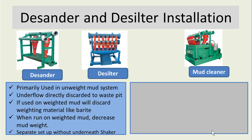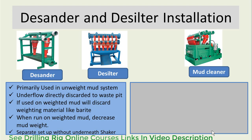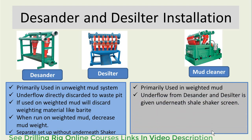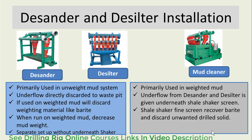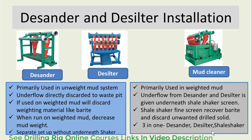This is the mud cleaner, which has a combination of desander, desilter, and shale shaker. It is primarily used in weighted mud. The underflow from the desander and desilter is given underneath the shale shaker screen. The shale shaker fine screen recovers barite and discards unwanted drill solids. Another feature of the mud cleaner is that it is three-in-one — desander, desilter, and shale shaker all together exist in the mud cleaner.